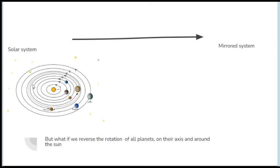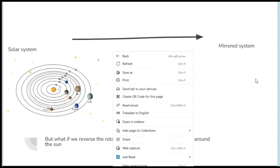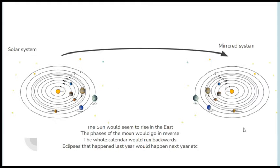But what if we reverse the rotation of all the planets on their axis, perform the mirror imaging operation and got a mirror system? What would happen then? Well, the sun would seem to rise in the east. The phases of the moon would go into reverse. The whole calendar would run backwards. Eclipses that happened last year would happen next year by our perception in that sense. Since everything is now moving in the reverse direction, the calendar would unwind.